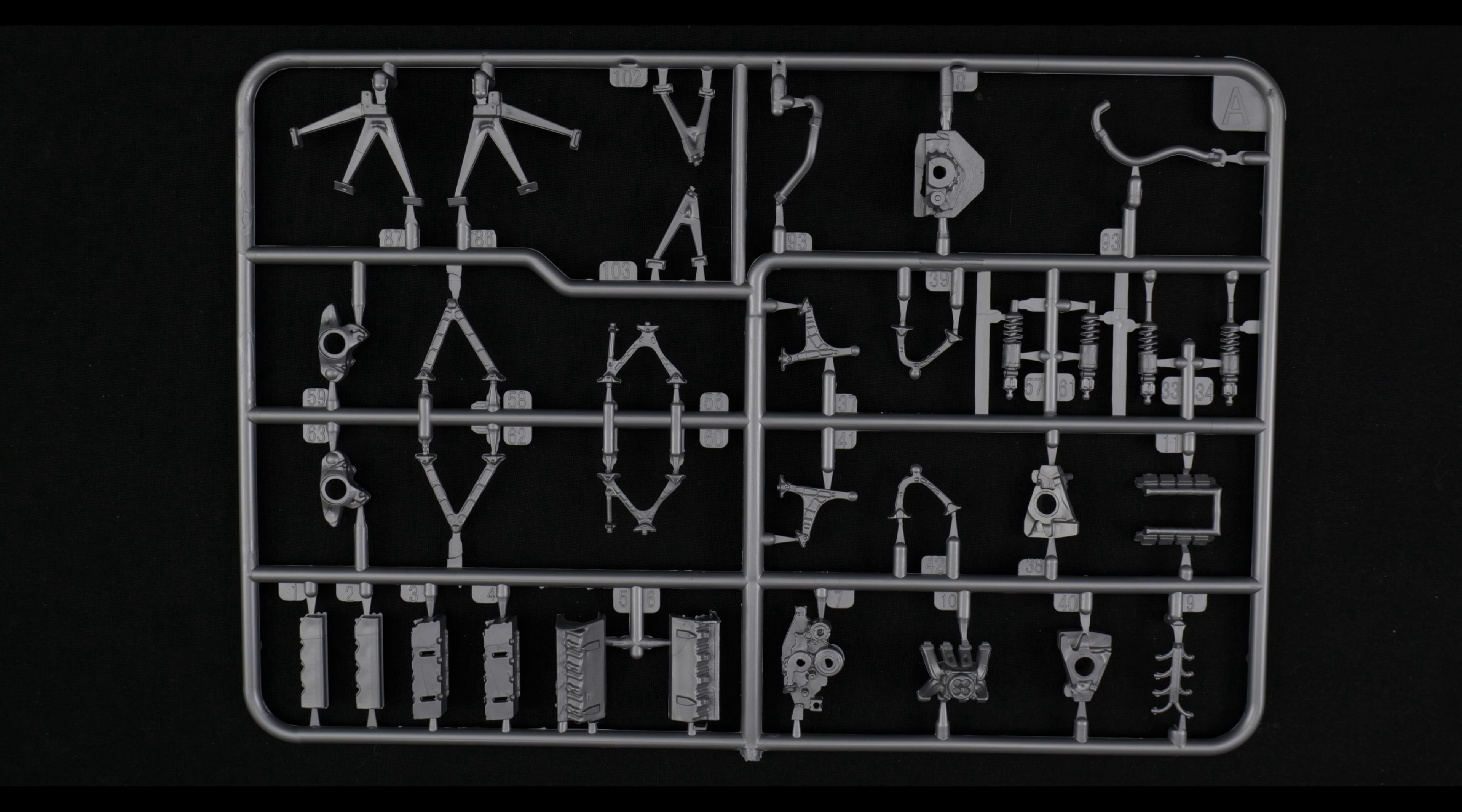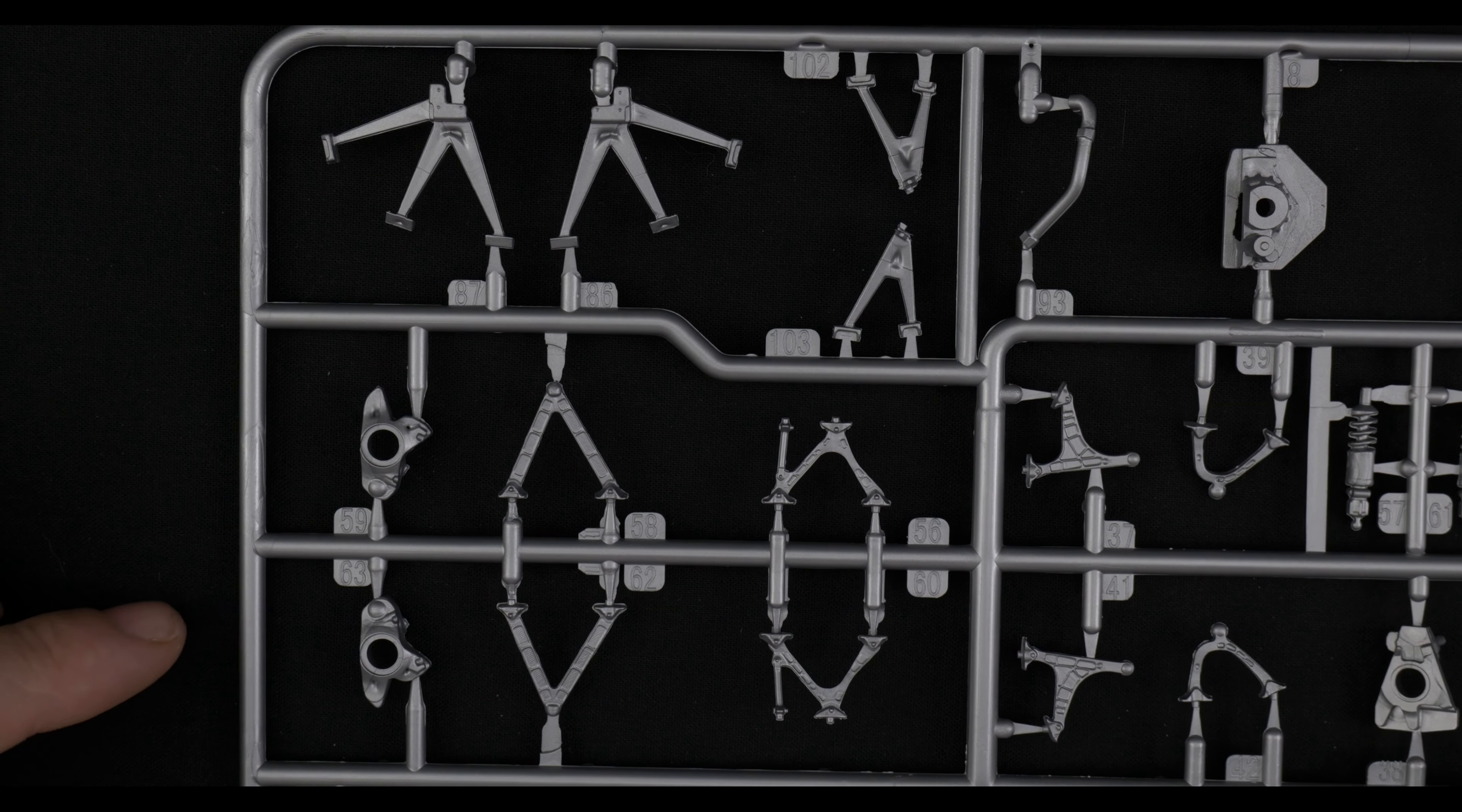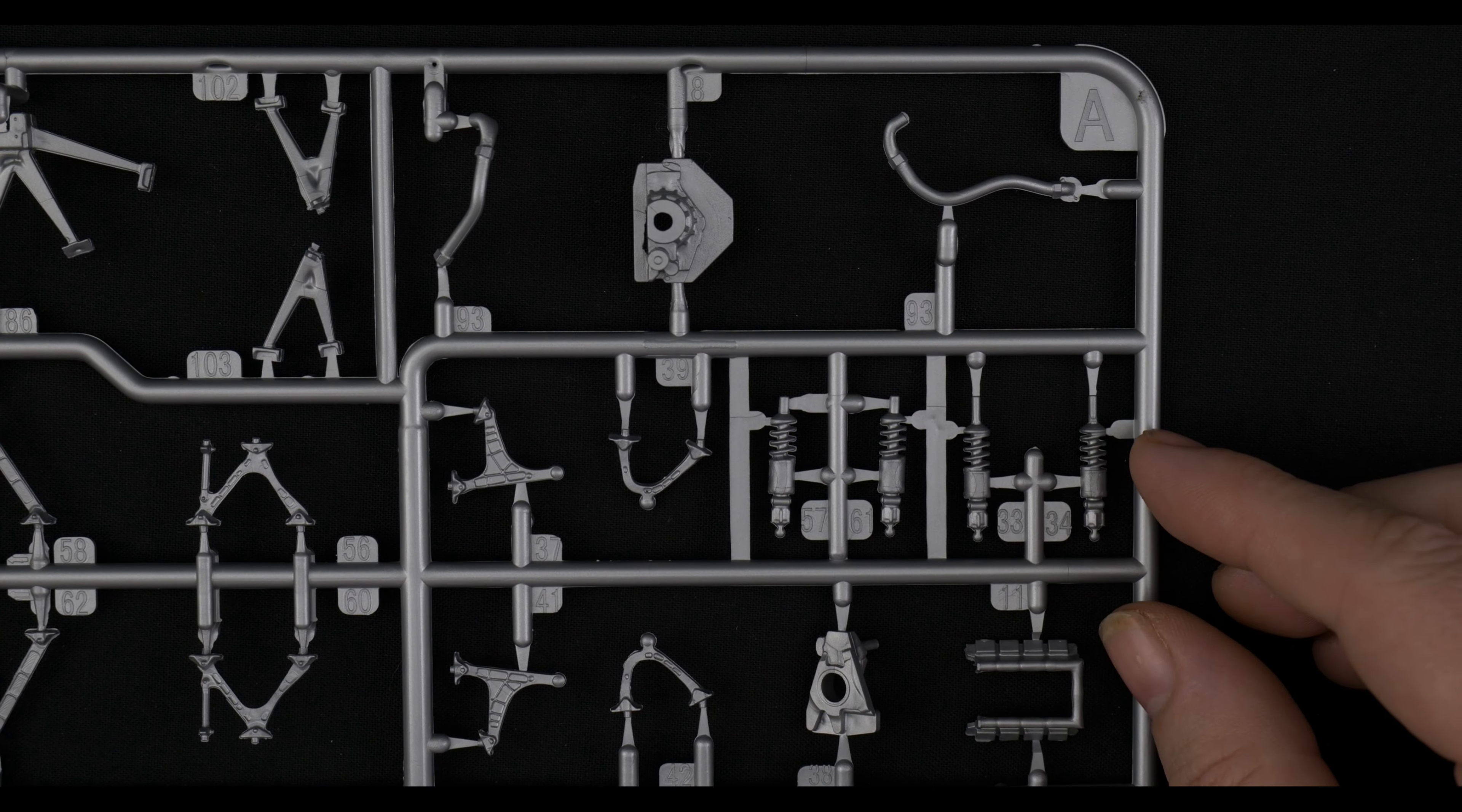Now we're taking a look at Parts Tree A, which is suspension and engine parts. Start up here in this corner. It has some suspension pieces. And those are going to be the rear bumper bracing, front bumper bracing, rear spindles, upper and lower control arms for the rear suspension. Over here we have the dampers, bell housing with the starter, radiator hoses up on the top, front suspension control arms, upper and lower.